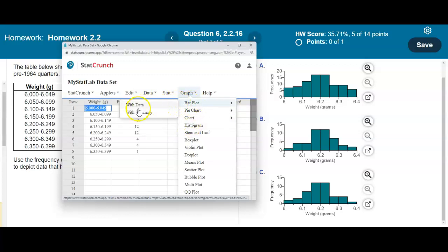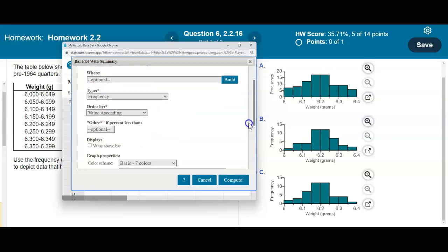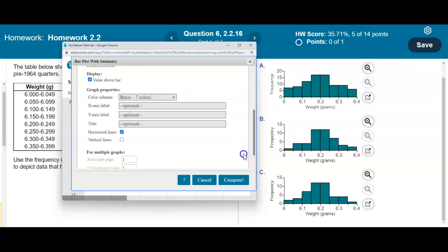We're going to select categories in. The categories represent the weight, so we'll select weight in grams. The counts in are going to be the frequency. We want a frequency distribution. For order by, we're going to say worksheet because we don't want ascending or descending. Then we'll select values above the bar.